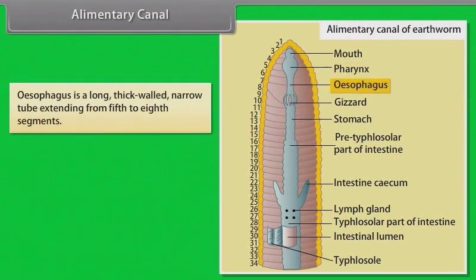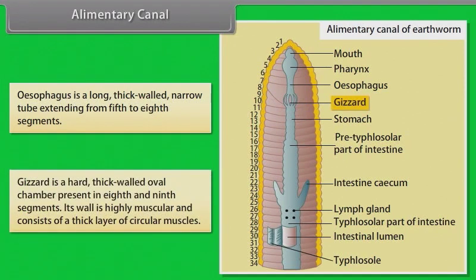The oesophagus is a long, thick-walled, narrow tube extending from the fifth to eighth segments. The gizzard is a hard, thick-walled oval chamber present in the eighth and ninth segments. Its wall is highly muscular and consists of a thick layer of circular muscles.